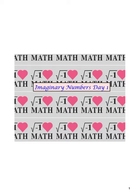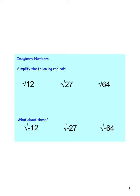As we think about simplifying radicals, for instance, root 12 can be rewritten as root 4 times root 3, which is 2 root 3. Or root 27 could be root 9 times root 3, so that's 3 root 3. The square root of 64 is 8. We're just simplifying the radicals here.